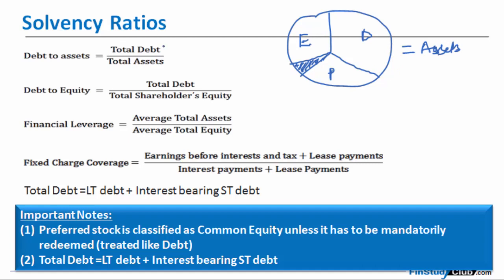Sometimes you will be calculating the debt ratio, which is total debt upon total assets. Sometimes you will be calculating the proprietary ratio, which is total equity upon total assets. And the reciprocal of that is financial leverage — total assets upon total equity. Different ratios have a similar sort of meaning.